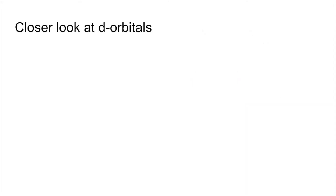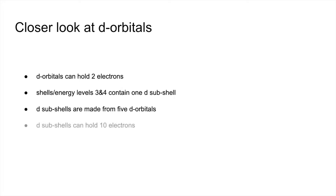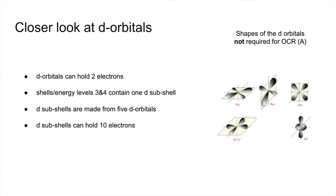D orbitals can hold two electrons. Shells 3 and 4 contain a D subshell. D subshells are made from five D orbitals, so the D subshell can hold ten electrons. For OCR, the shapes of the D orbitals aren't required — but that's what they look like, and if you put them all together for the subshell it looks something like that.